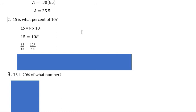And if you write that algebraically, we could say 15 equals 10P. To solve that, you would divide both sides by 10. The 10s would cancel on the right side and then you'd have 15 over 10 on the left side.